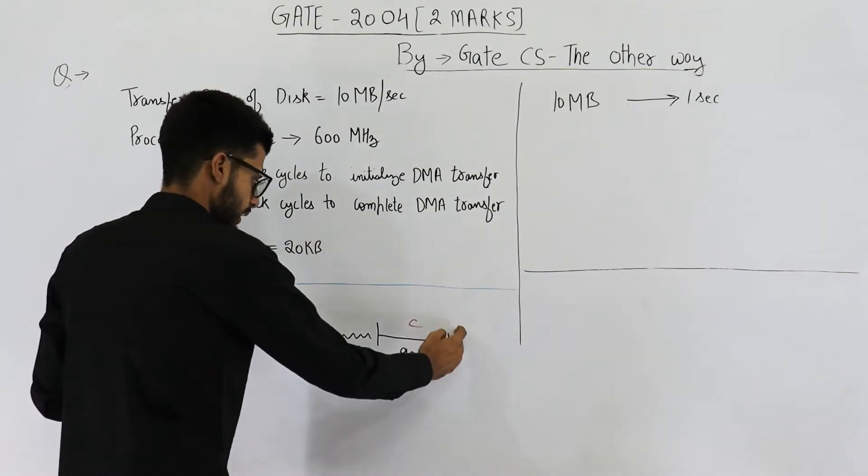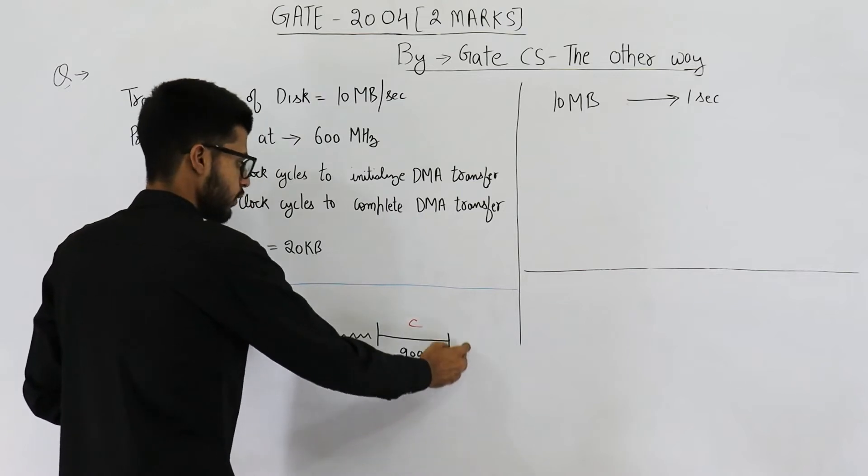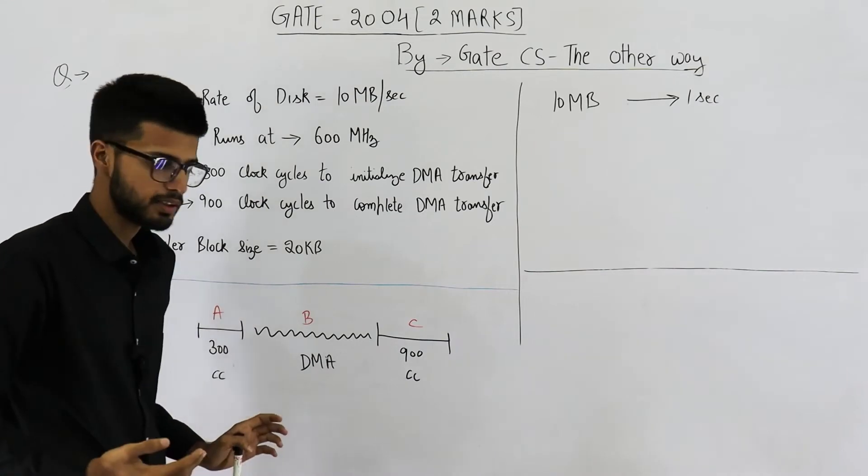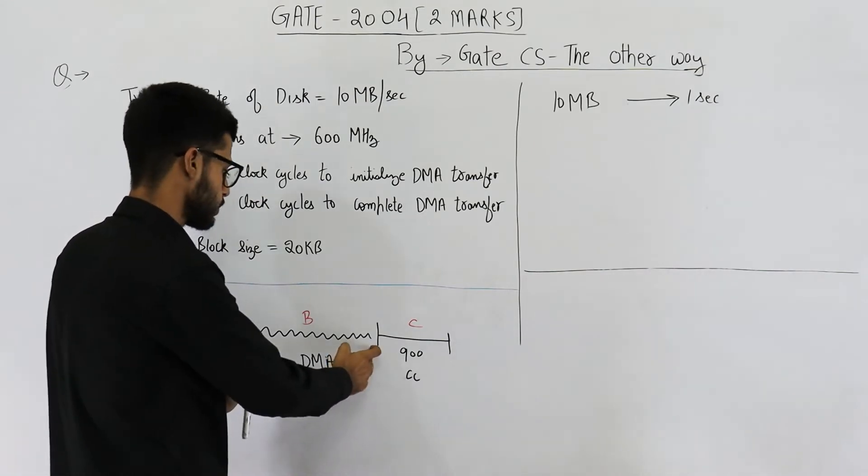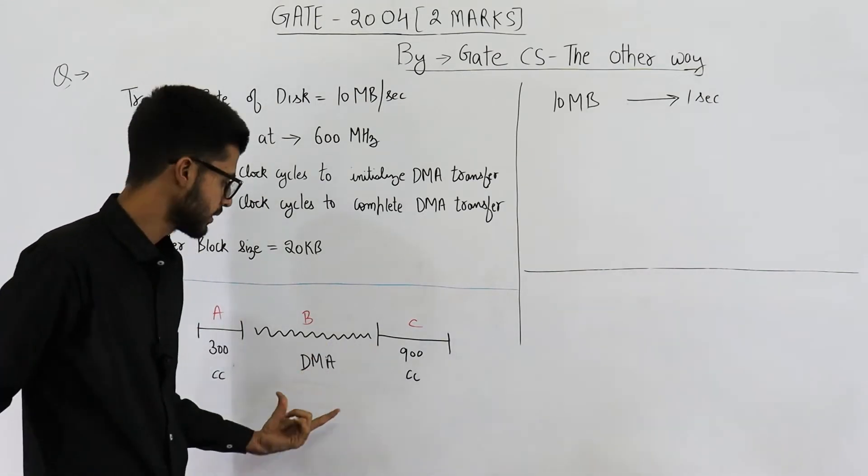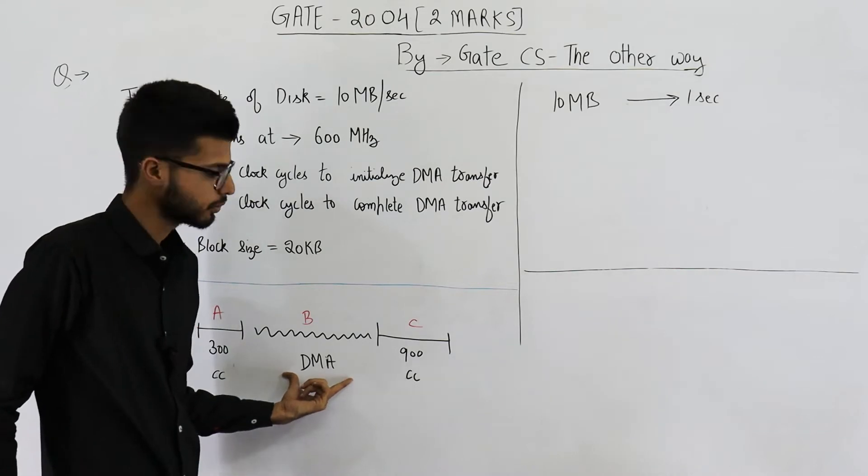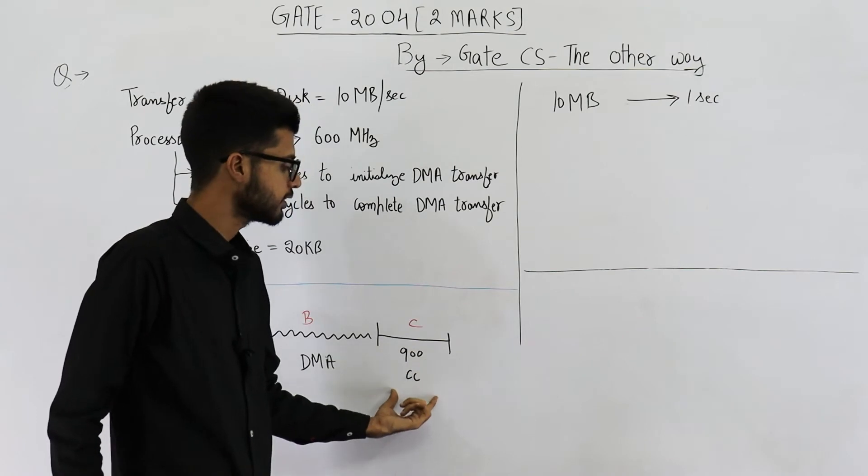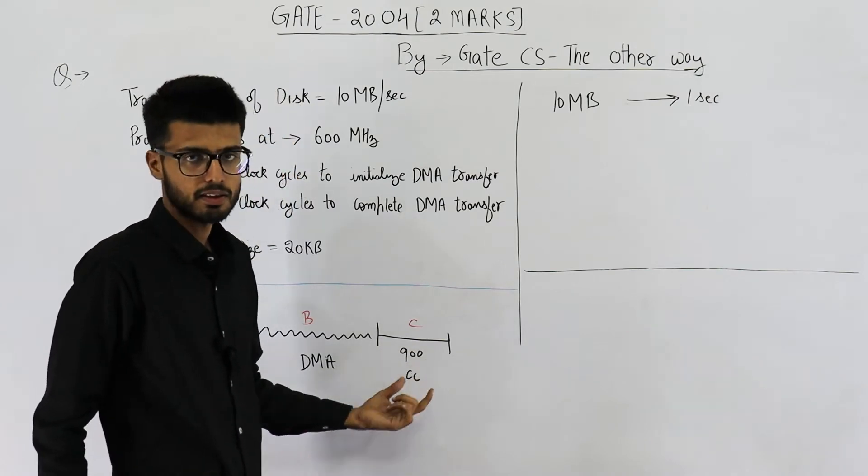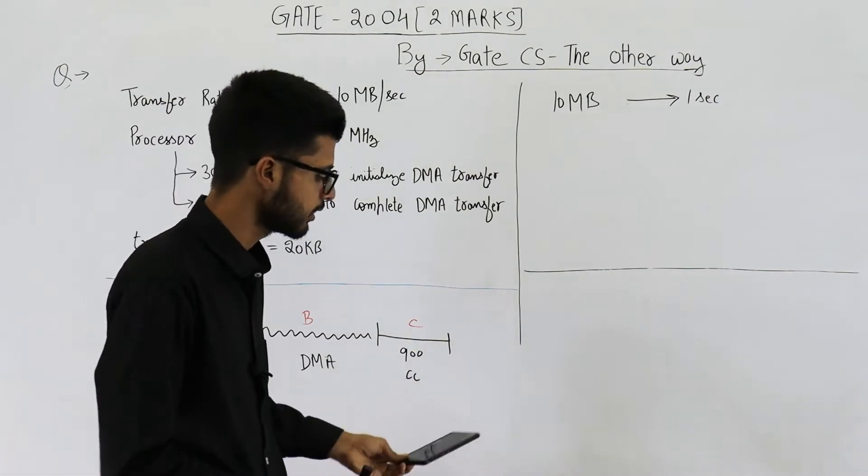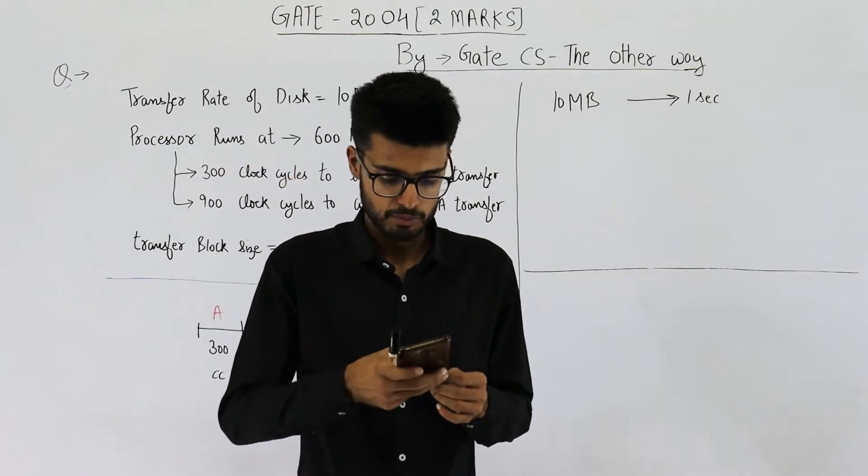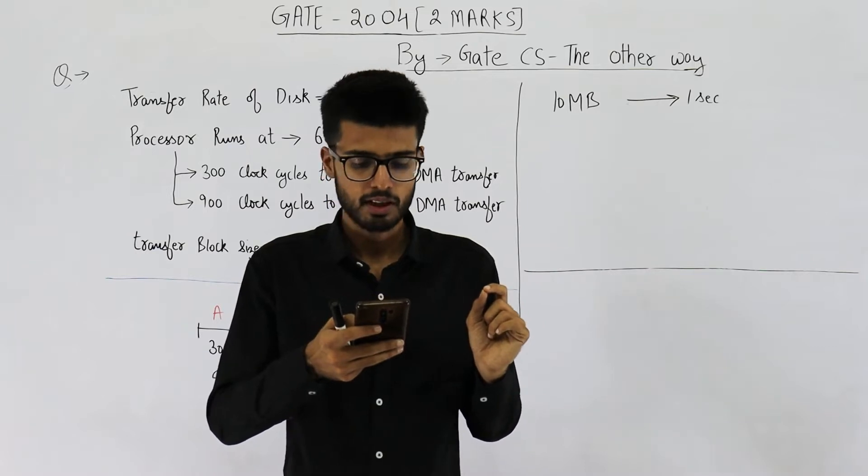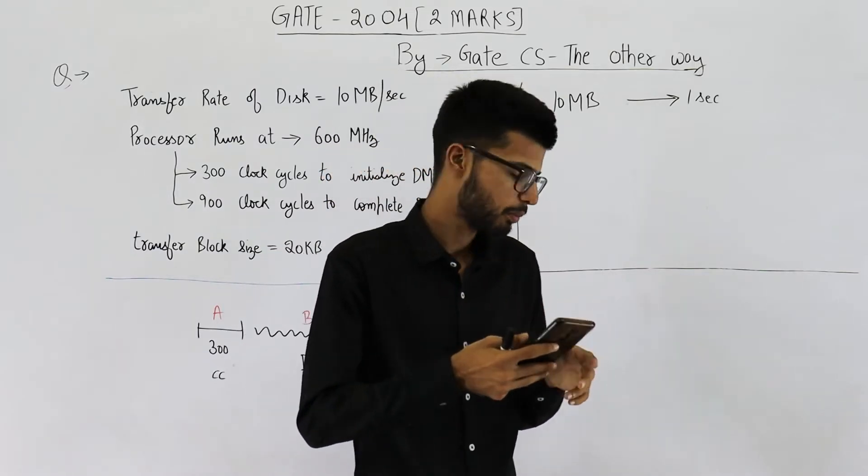So what this means is, whatever is the total time taken for this transfer, initially we need to spend 300 clock cycles. After that, rest of the transfer, the actual data transfer will be done by this DMA chip. Then at the end of this transfer, CPU again needs to spend 900 clock cycles. They are asking what percentage of time is spent by the CPU? The line is, what is the percentage of processor time consumed for the transfer operation?